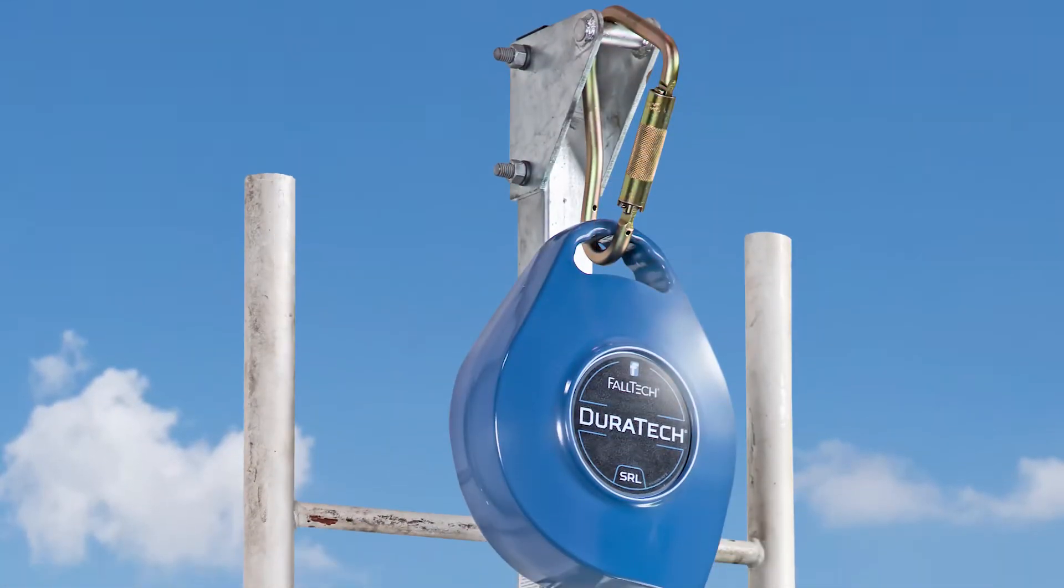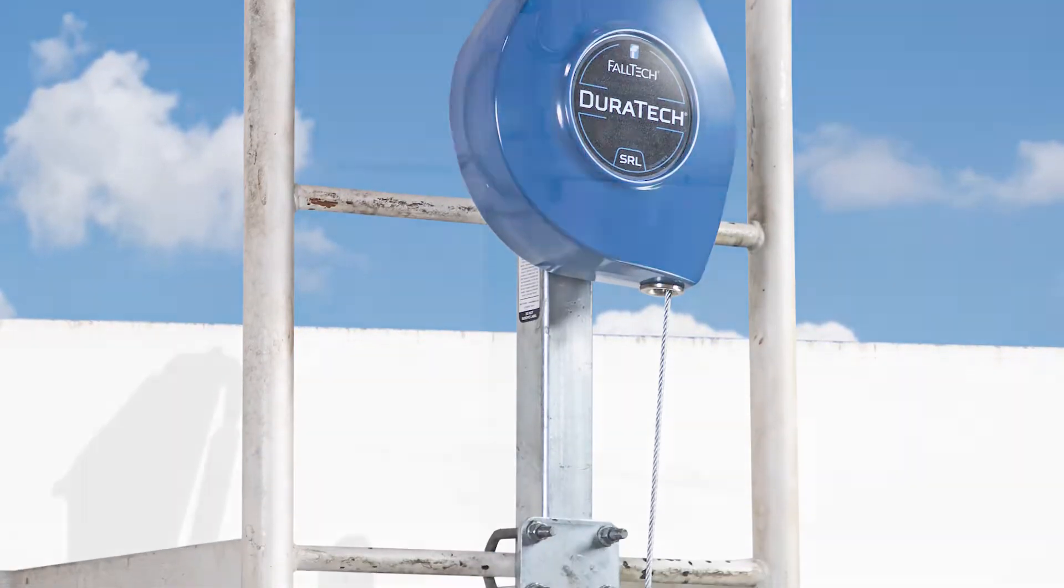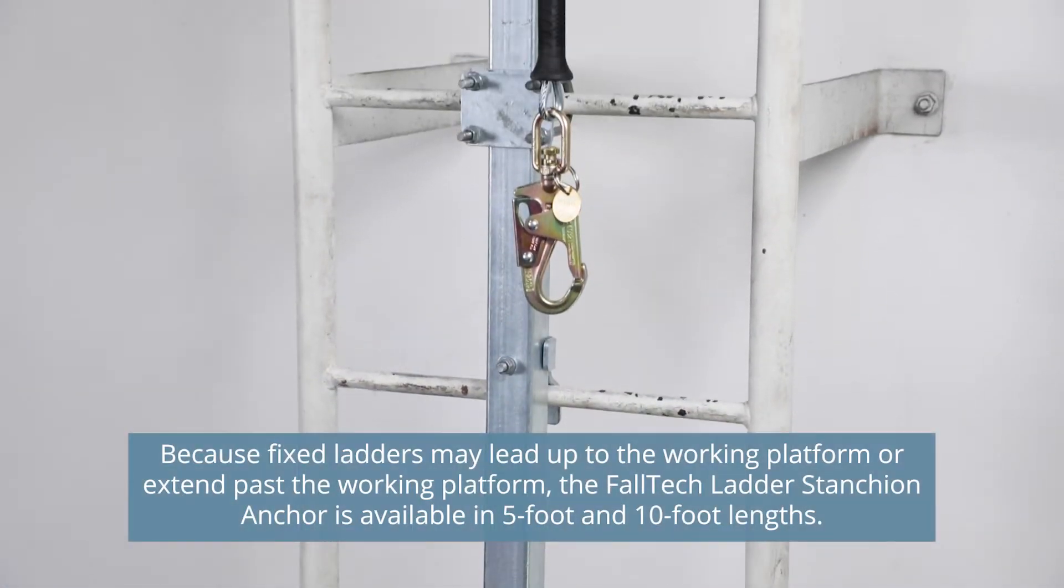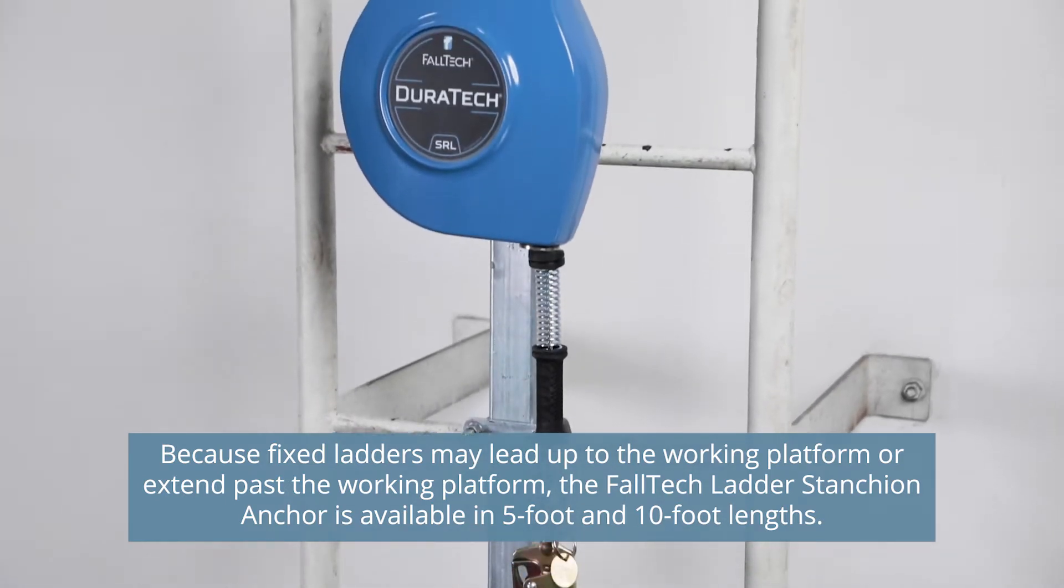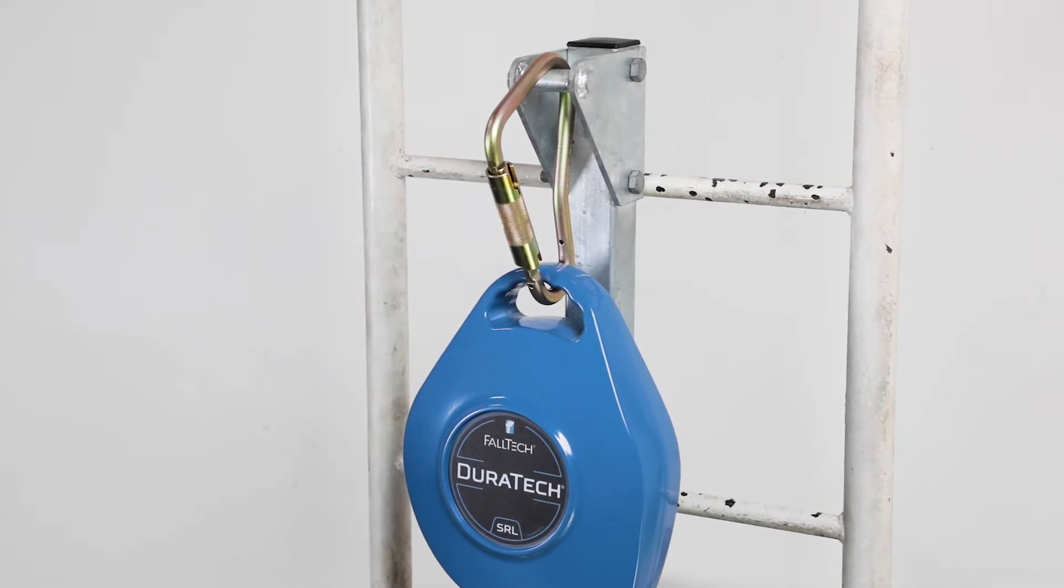The FALTEC bolt-on ladder stanchion anchor is designed to work as part of an overhead anchorage system for one worker when climbing vertically on fixed ladders. It's a quick, inexpensive solution for the new ladder requirements from OSHA's final rule on walking working surfaces for personal protective equipment.